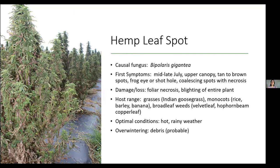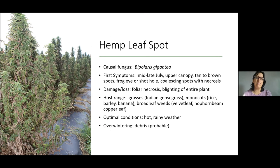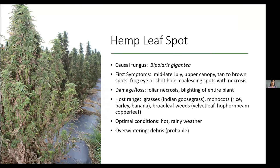We're seeing less severe blighting as the years go on. Some of the most susceptible cultivars from the past have gone by the wayside, and newer cultivars tend to be more tolerant. Regarding identification: Bipolaris gigantea is primarily a disease of monocots — grasses, rice, barley, banana. We had never seen it on broadleafs until hemp, and now we're also seeing it on a handful of broadleaf weeds in the field. We think the green bridge may be some of these broadleaf weeds like hop hornbeam and copper leaf.